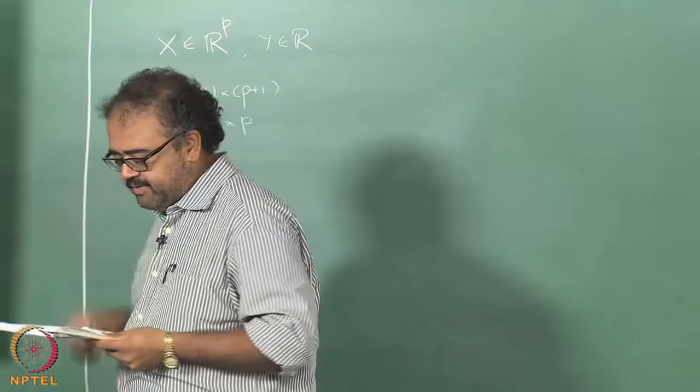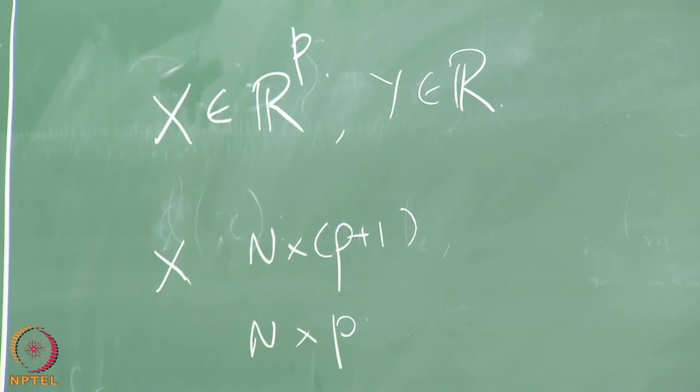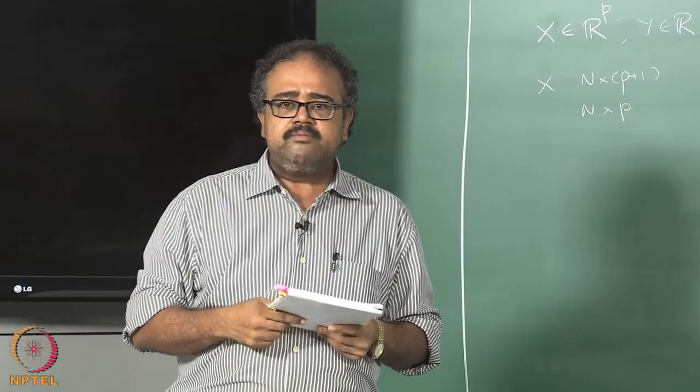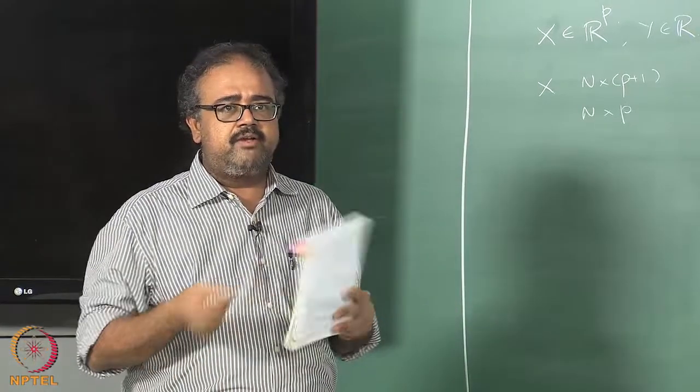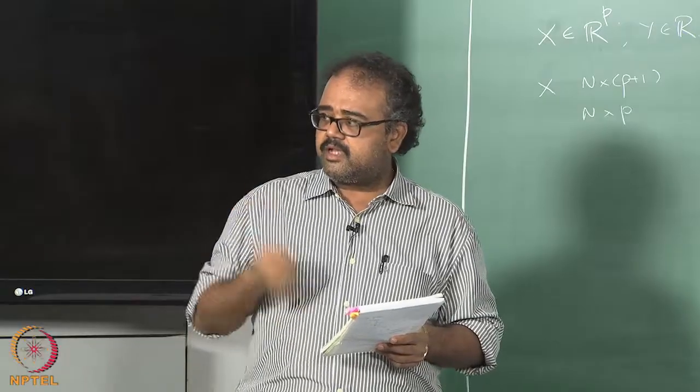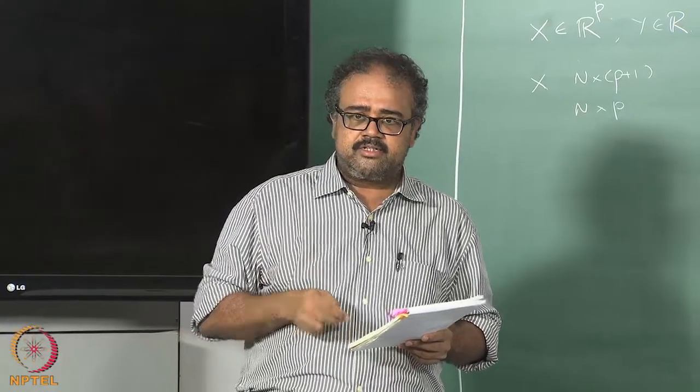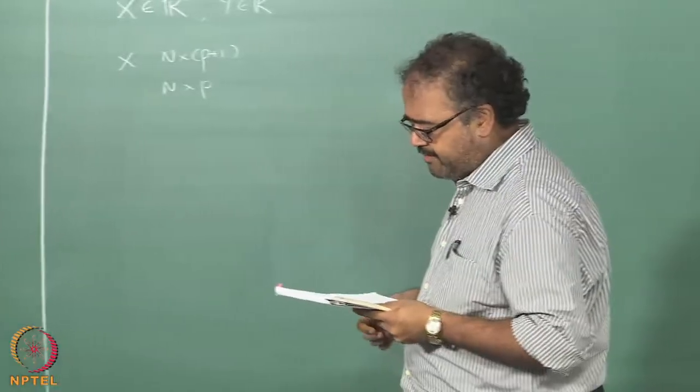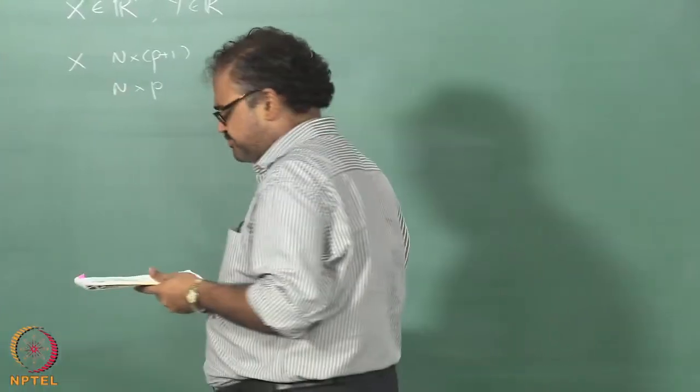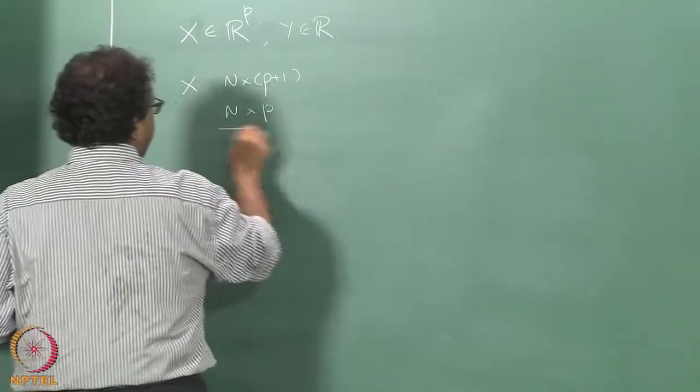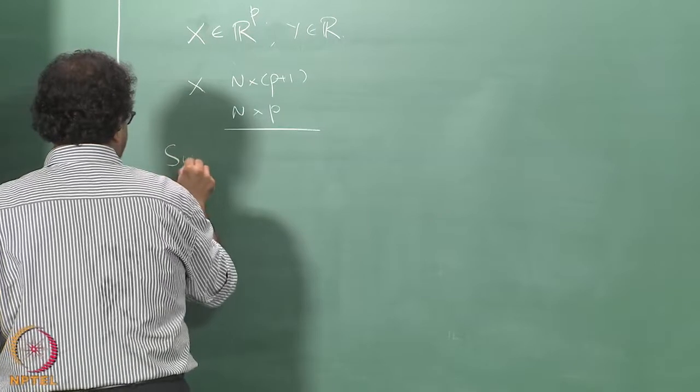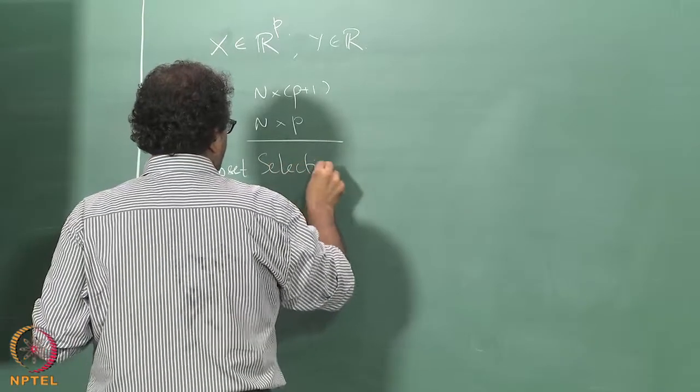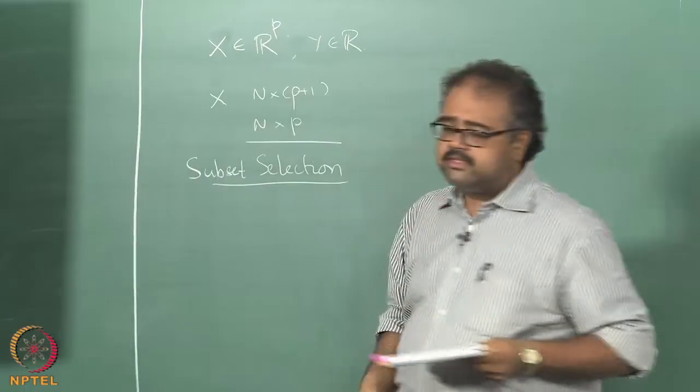That is the basic setup that we have, and we are essentially looking at minimizing some squared error. We looked at the simple linear regression, we looked at the case where there were multiple inputs, and we looked at how you can interpret that in terms of single variable regression, univariate regression. This is essentially what we looked at in the last class, and so this class we will go on to look at more complex things that you can do with linear regression.